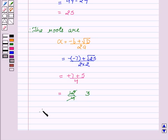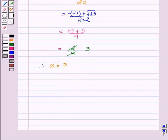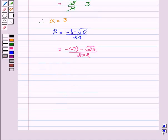Similarly, beta equal to minus b minus square root of d upon 2a. It can be written as minus of minus 7 minus square root of 25 upon 2 into 2. This gives plus 7 minus 5 upon 4, or 2 upon 4. This implies beta equal to 1 by 2.